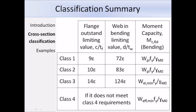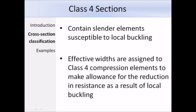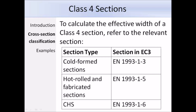To calculate the effective width of class 4 sections, refer to the relevant Eurocode part: EN 1993-1-3 for cold-formed sections, EN 1993-1-5 for hot rolled and fabricated sections, and EN 1993-1-6 for circular hollow sections.